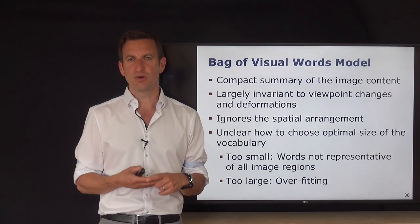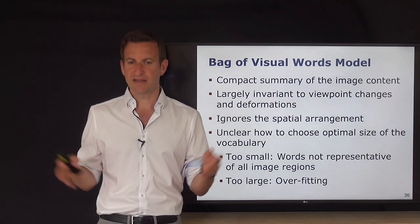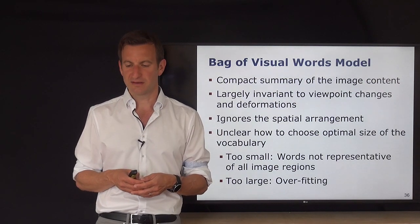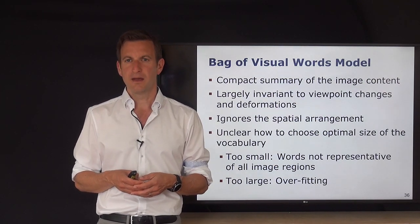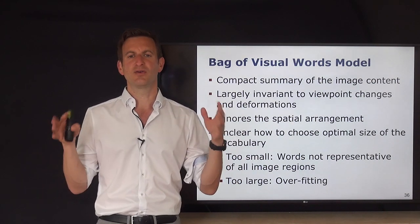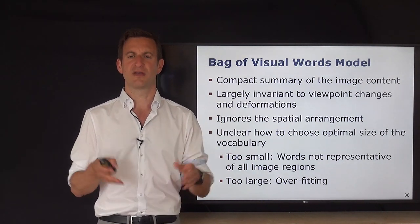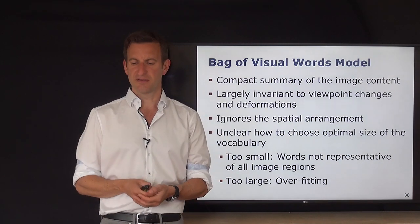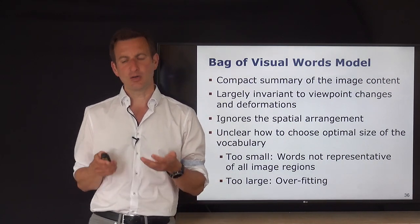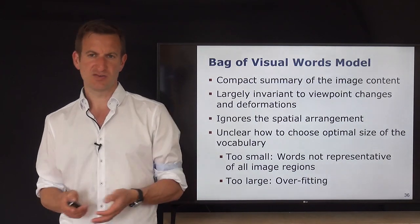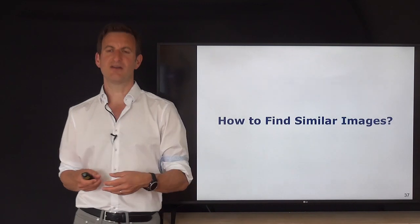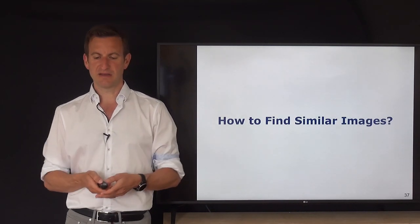One issue is choosing the size of the dictionary or vocabulary. If too small, too many different things are grouped together and it's not expressive. If too large — in the extreme, every feature becomes its own visual word — this overfits to specific images and loses generalization, degrading performance. For a small database of a few hundred images, start with k equals 1,000. For much larger databases, upgrade to 10,000 or 20,000. Getting to 100,000 words requires very large databases.